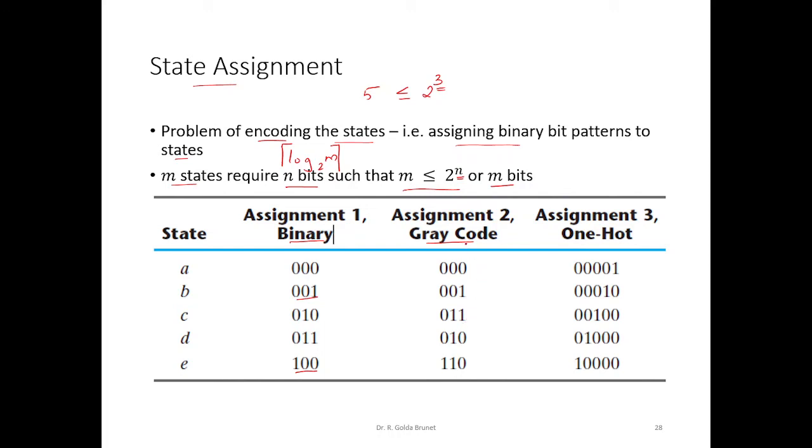Okay, that is the gray code assignment and using n bits, when we have m states, using m bits is called one-hot assignment. So, A is represented by 4 zeros followed by a 1, B will be represented by 1 in the second bit position and C will be represented by a 1 in the third bit position and D by,